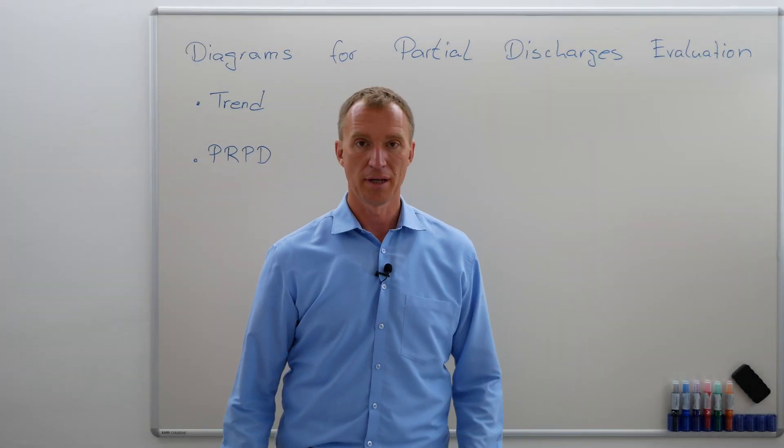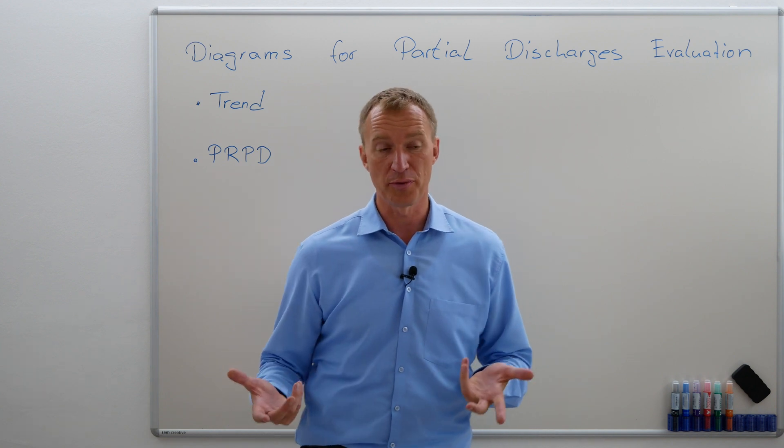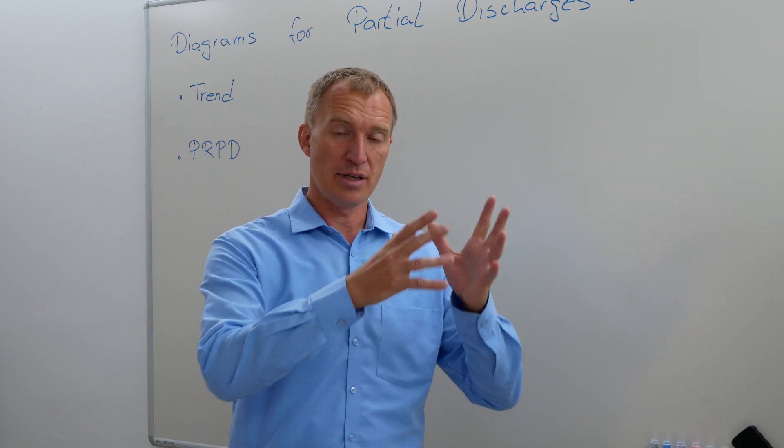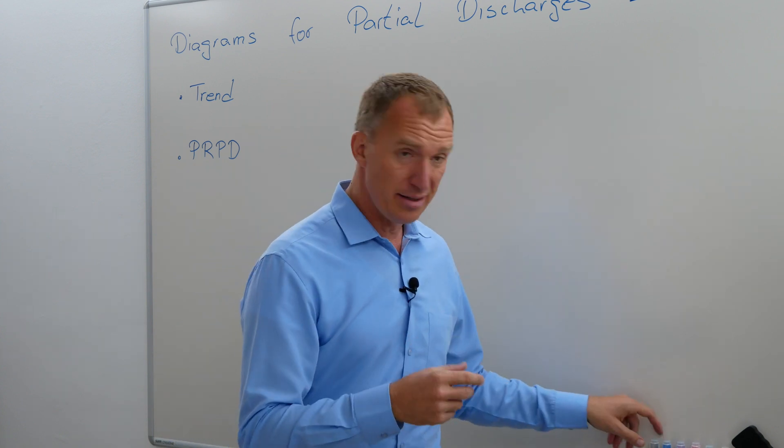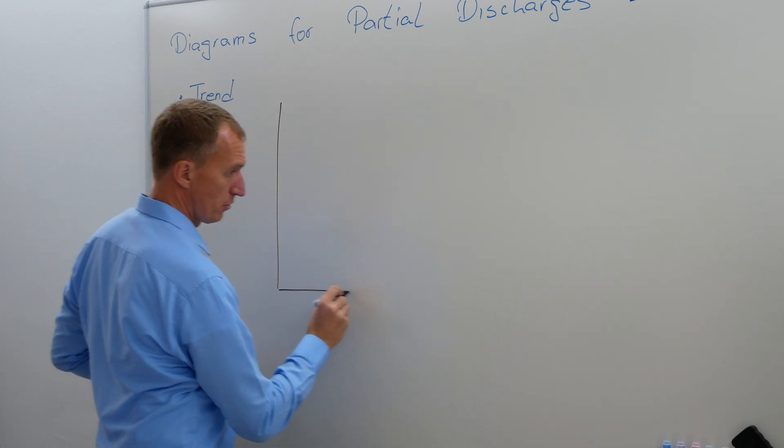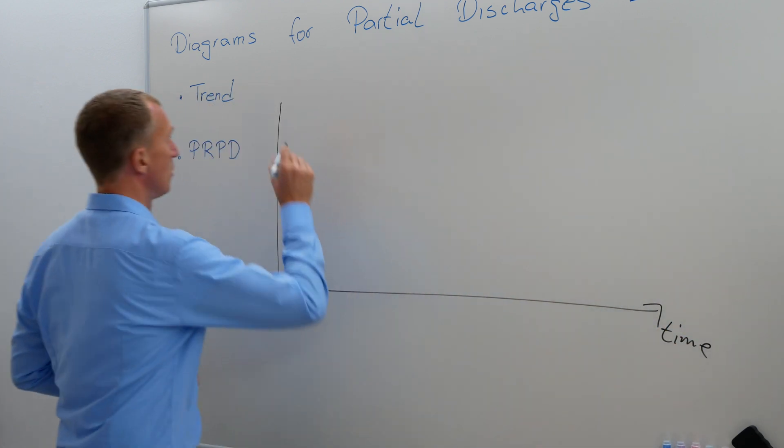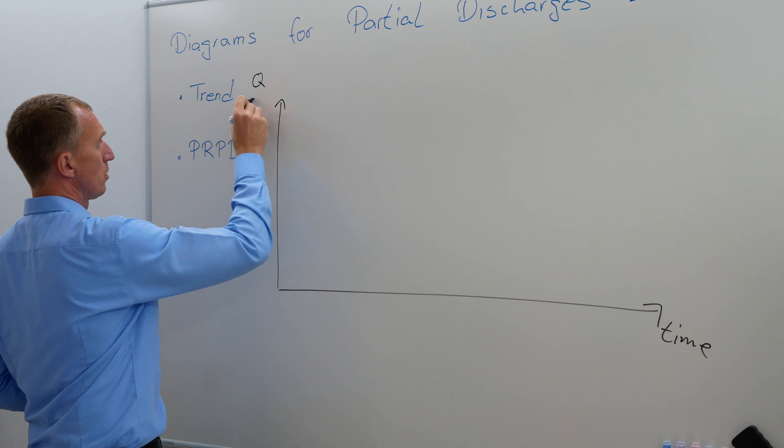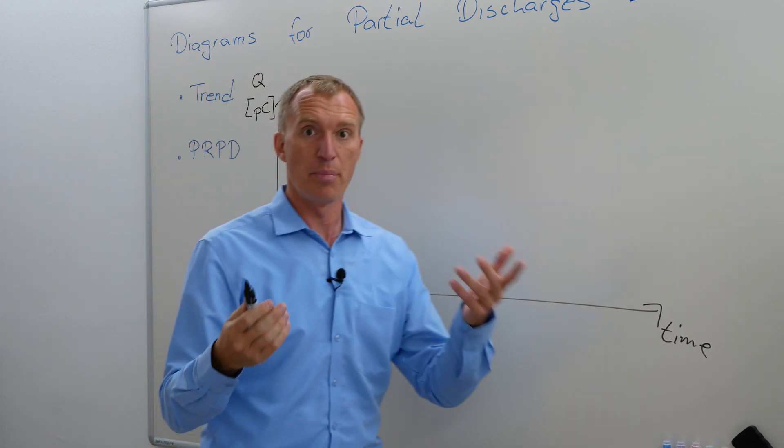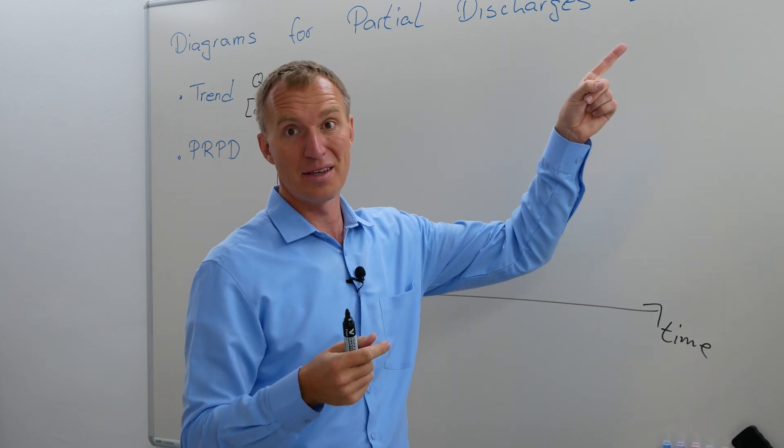How to evaluate partial discharges. Let me show you the easiest way and the most common way. Very often partial discharges or the results of a partial discharge measurement are put into diagrams, and the easiest diagram I know would be the trend. Very easy, we take this as time and here we're going to use Q charge in picocoulombs, and this is where we're going to see our apparent charge. It's not the real charge but the apparent charge.